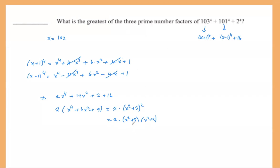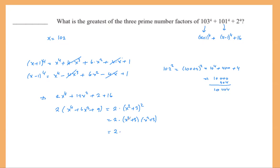We already have three factors. We are looking for the largest prime factor. Plugging in x = 102: 102 squared equals (100+2)^2 = 10000 + 400 + 4 = 10,404. Adding 3 gives x^2 + 3 = 10,407. So the sum equals 2 times 10,407 times 10,407.